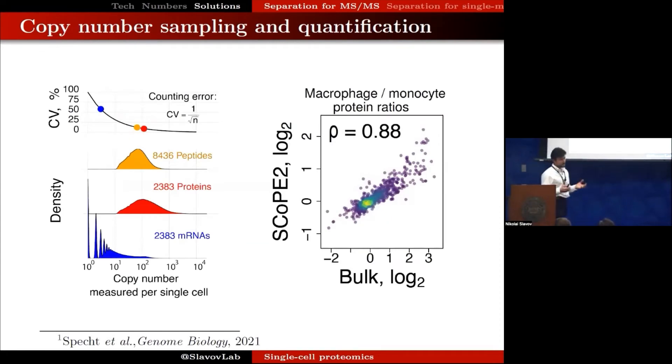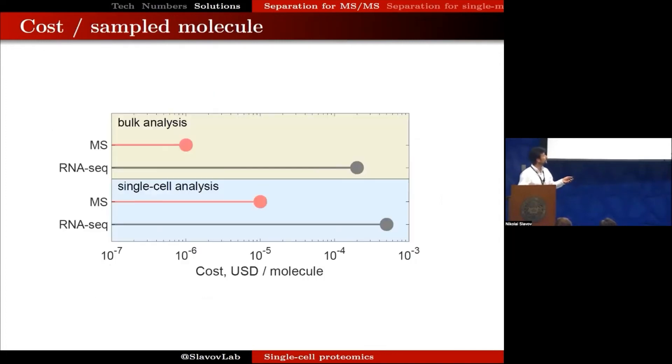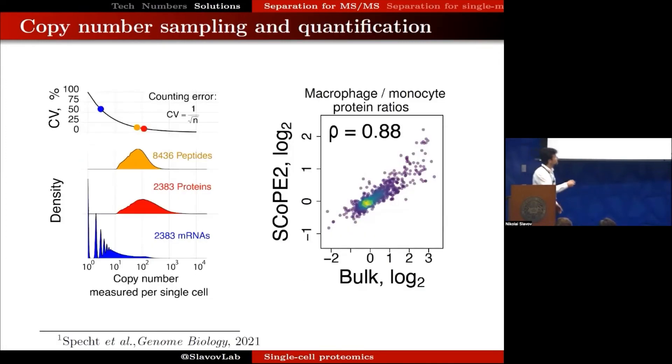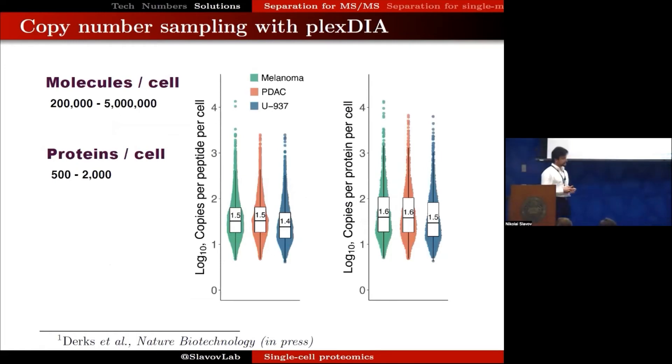Looking at our data for applying mass spectrometry to single mammalian cells and how this stacks up in terms of estimated copy numbers, for the average protein quantified, we sample over 100 copies, which compares quite favorably to the number of copies sampled by 10x Genomics with very deep sequencing applied to the same cells. This is consistent with obtaining quantification with a relatively low amount of noise from counting errors. Similarly, with newer methods of mass spectrometry analysis, we can count a large number of copies, many dozens of molecules being sampled per peptide per protein, and in some cases, tens of thousands.